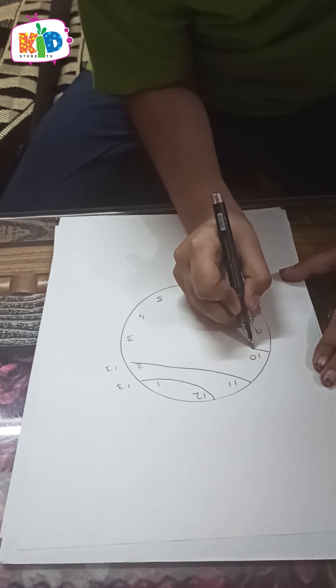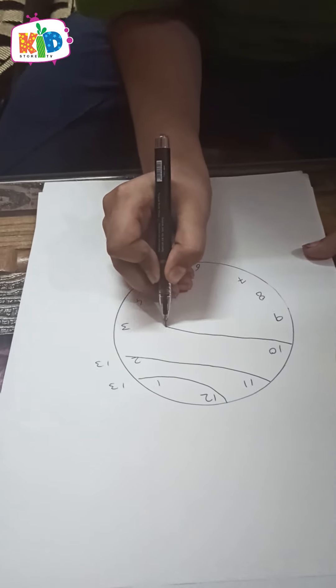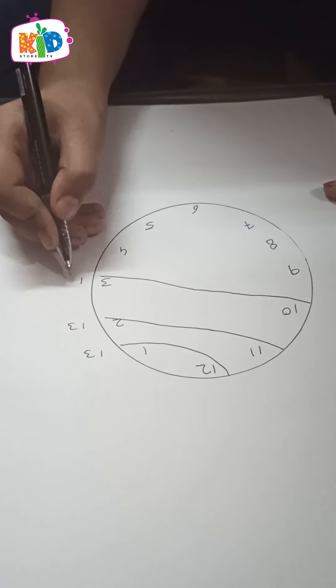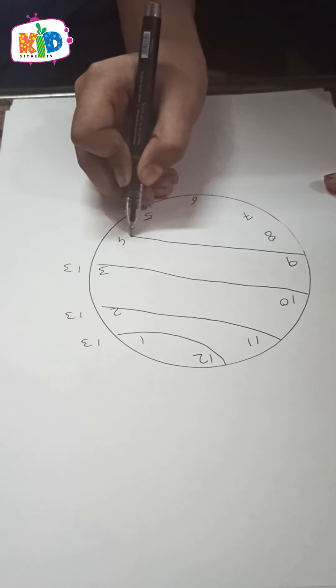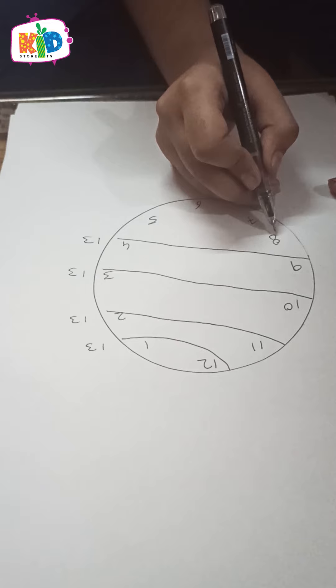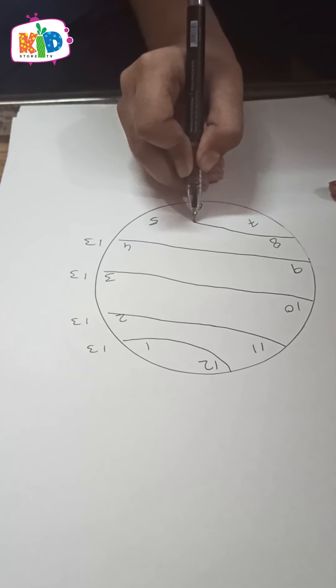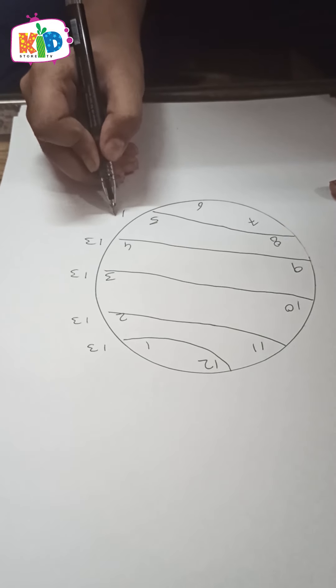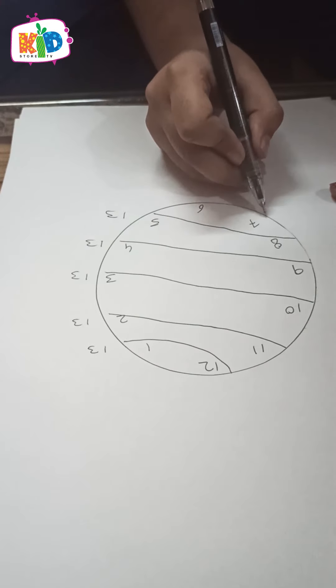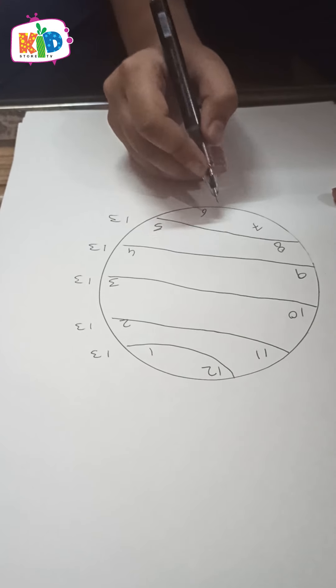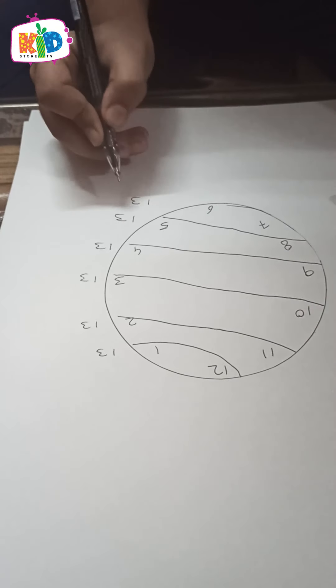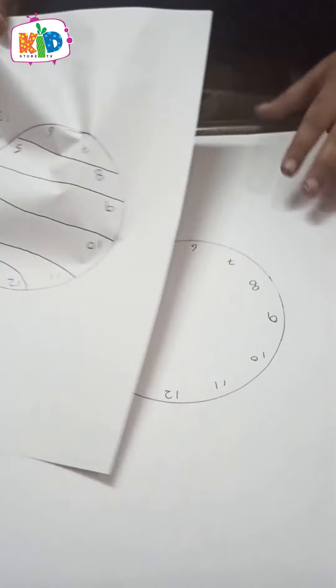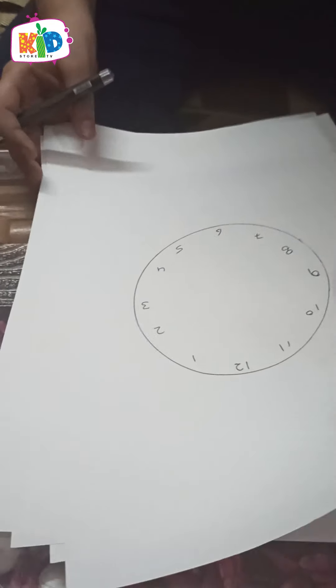If we add 9 plus 6... So my next trick is 13. If we add 8 plus 5, we get 13. And if we add 7 plus 6, we get 13. So my next magic trick...